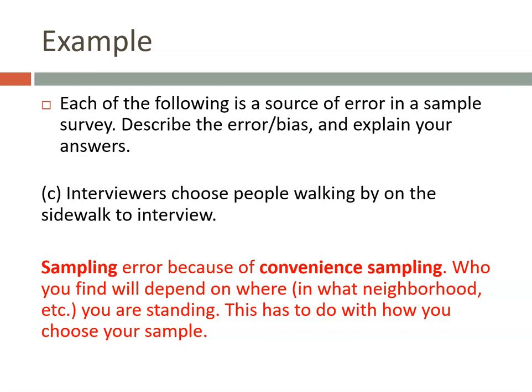Third example: interviewers choose people walking by on the sidewalk to interview. This is a major problem in the sampling method — it's an example of convenience sampling. Who you find depends on where you're standing. Convenience sampling and voluntary response sampling are not good ways to create a sample. If these vocab terms get mixed up, you're better off just explaining what's happening, though you should still work on remembering the exact terms.